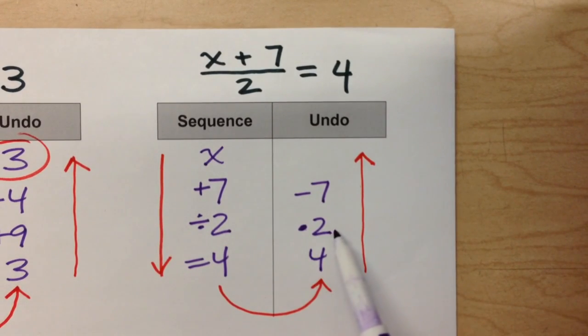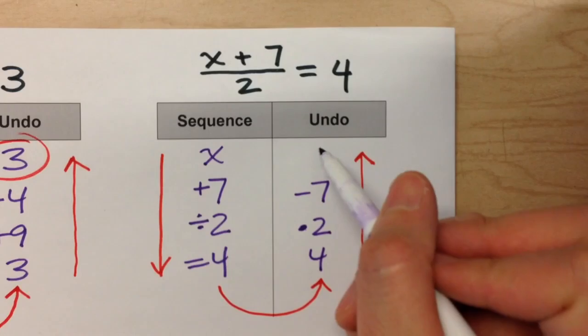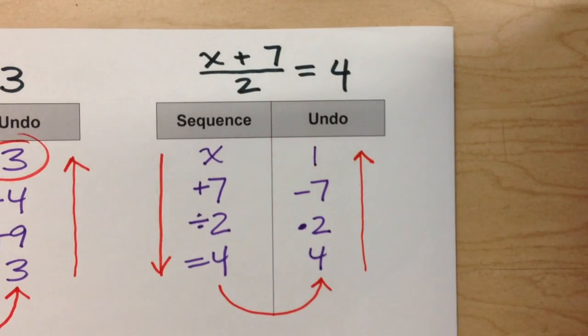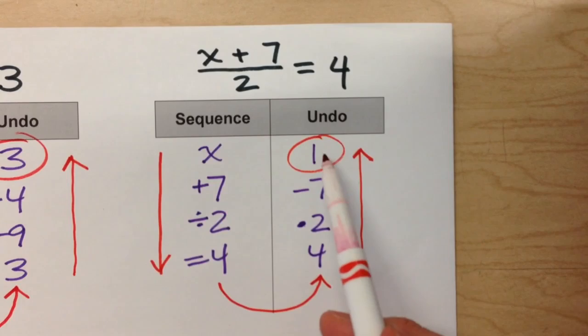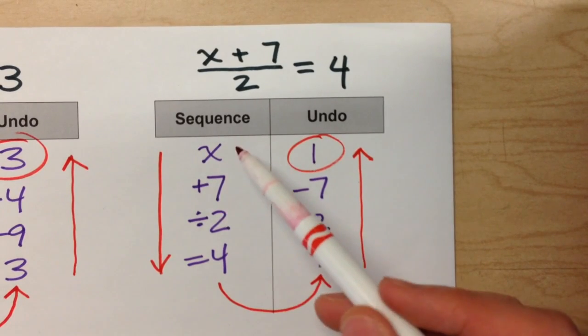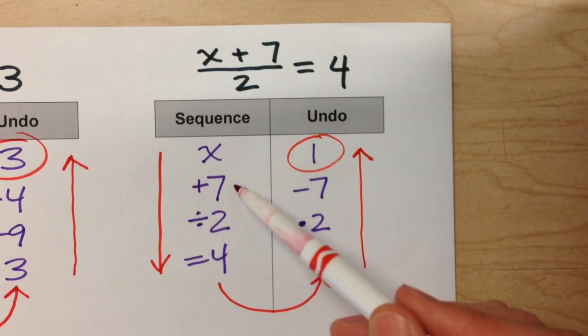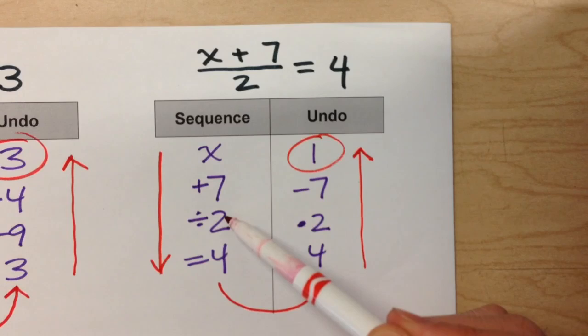4 times 2 is 8 minus 7. That means x must have been 1. And again, if I want to check it, I take 1, put it back in the sequence column. 1 plus 7 is 8, divided by 2 is 4. And that's exactly what it should have been.